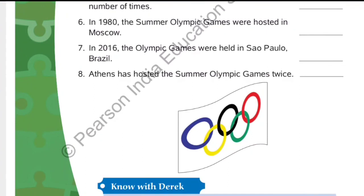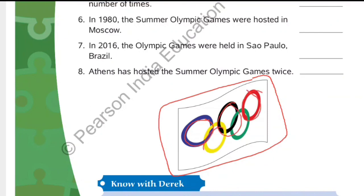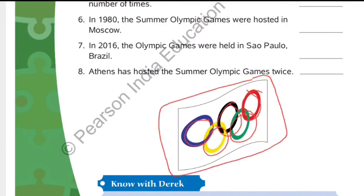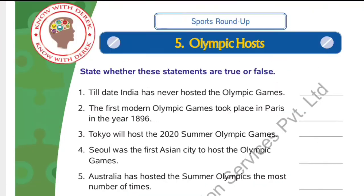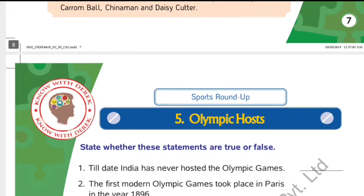As you can see here, this is the flag of the Olympic Games, and you can see the five different rings which represent the five different continents, as we discussed earlier. With this we have come to the end of the chapter. I hope everything is clear. Thank you and have a nice day.